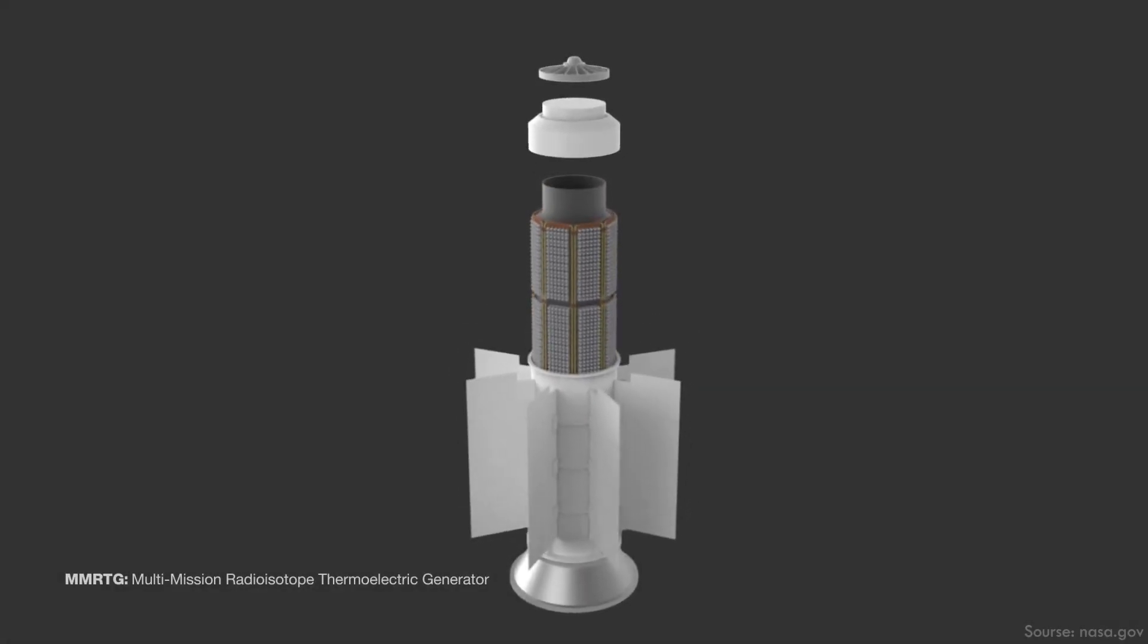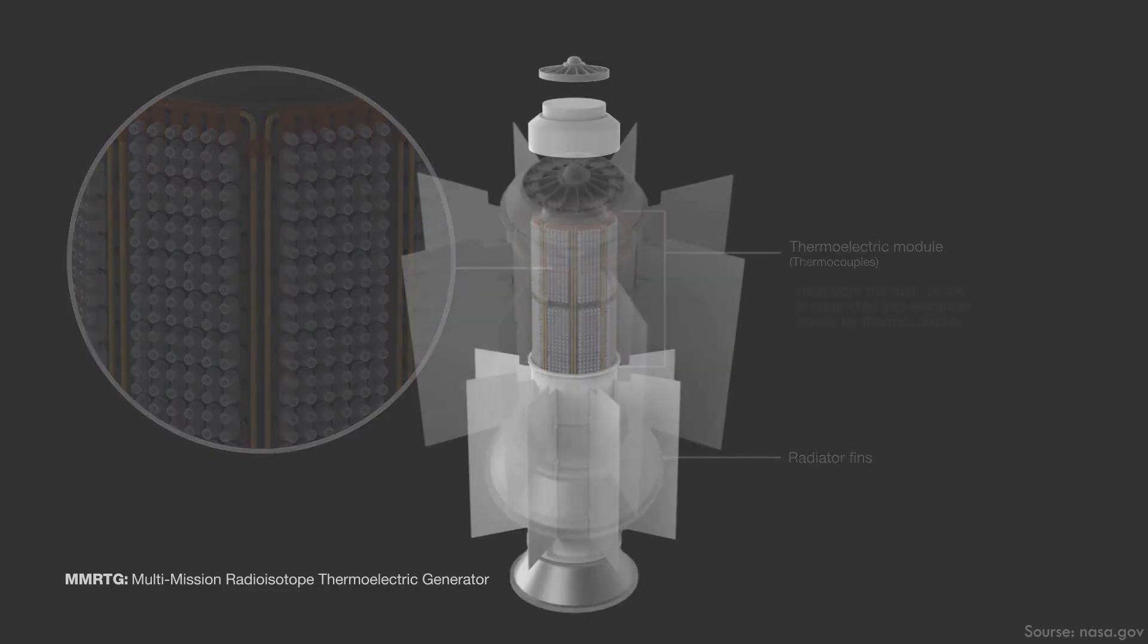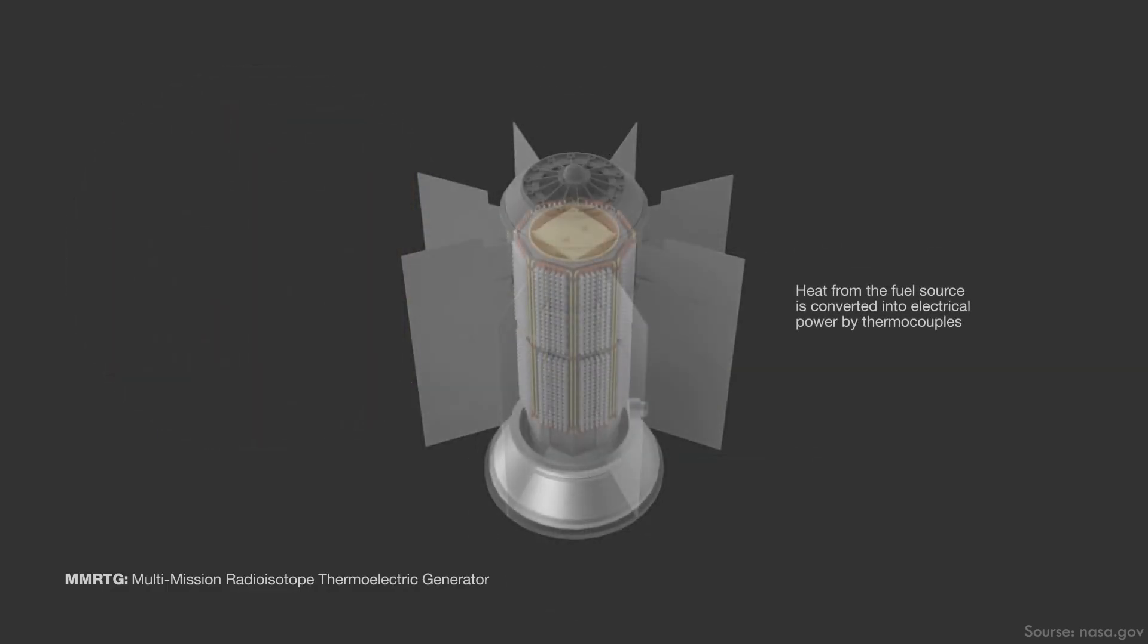For each Voyager, there are three RTGs, and as their fuel source, they make use of plutonium-238. And as the isotope decays, heat is produced. The heat produced is then converted to electric energy.